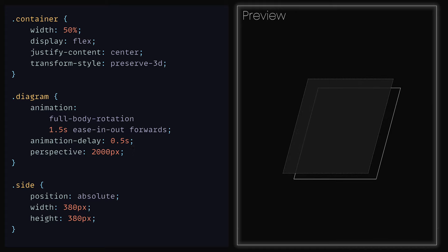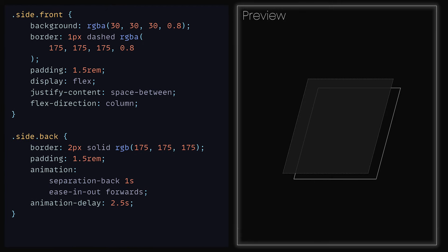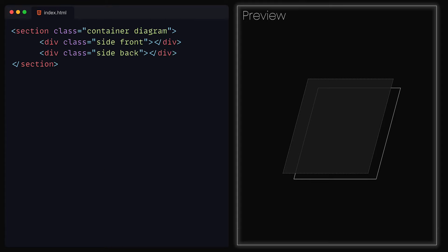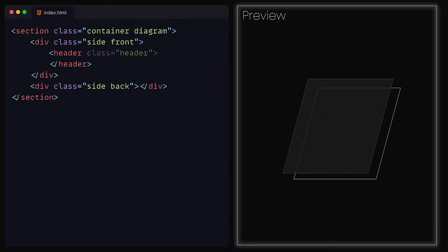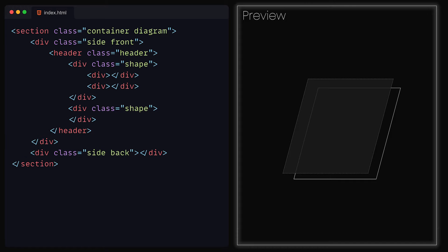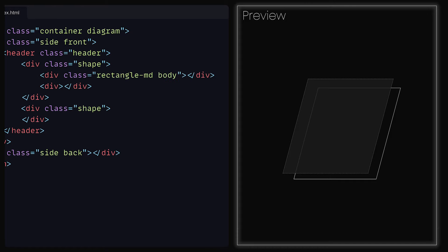We now have the first few animations out of the way and have also implemented our first bit of 3D CSS. Now let's start to add the rectangles that pop off from the front. The first thing that we need to do is ensure that the side front also preserves our 3D transformations. Because we added it to the container, this does not necessarily mean that the children will inherit it. To ensure that they do, we can add transform style inherit to the side front classes. Then inside of the HTML file, within the first div element, we can add a header tag and provide it with a class header. This will hold the top rectangles that we saw in the demo. Within the header, we can add two divs that have the class Shape.